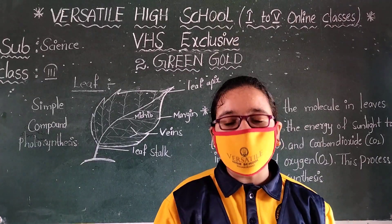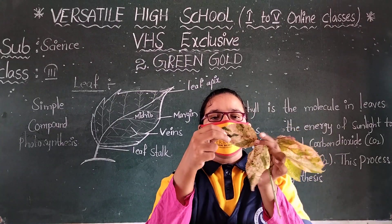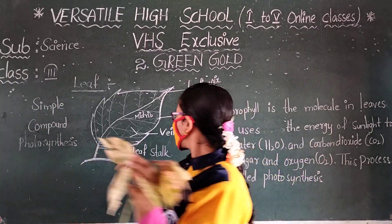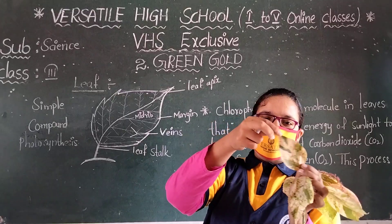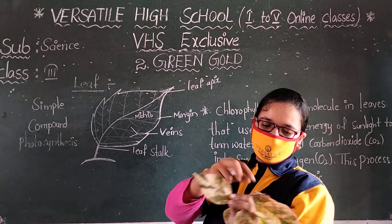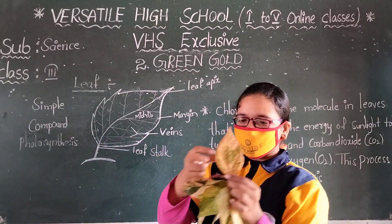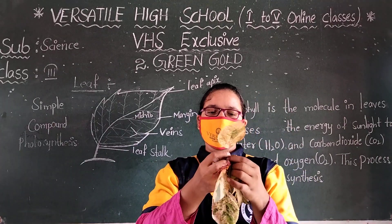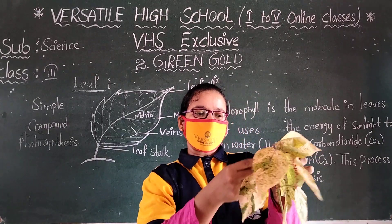A leaf is made up of many layers, sandwiched between two layers of skin cells. Look at this — this is the margin, this is the leaf apex. These are the veins. This is the leaf stalk. This leaf stalk is attached to the stem.